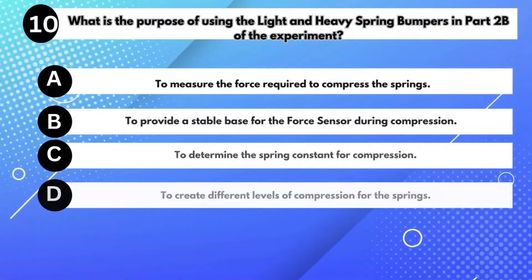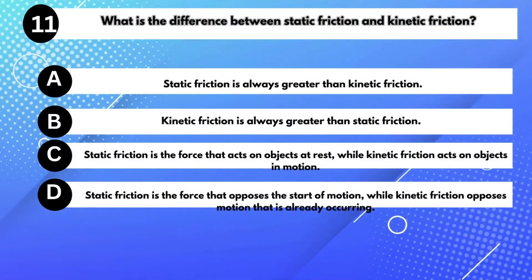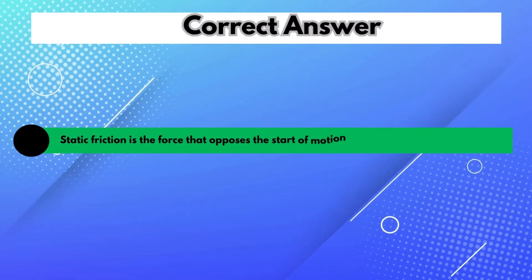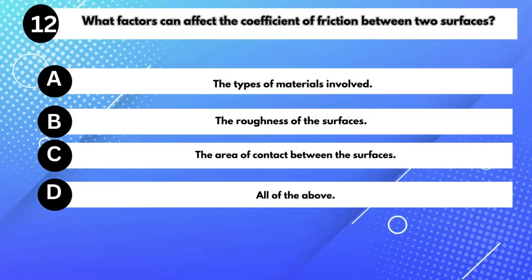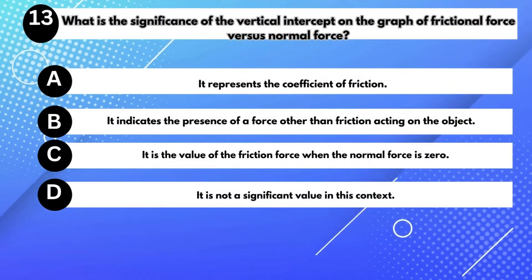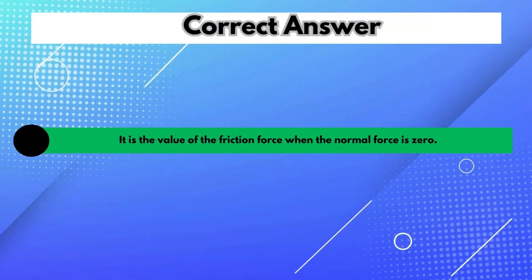What is the purpose of using the light and heavy spring bumpers in part 2B? Answer D: To create different levels of compression for the springs. What is the difference between static friction and kinetic friction? Answer D: Static friction is the force that opposes the start of motion, while kinetic friction opposes motion that is already occurring. What factors can affect the coefficient of friction between two surfaces? Answer: All of the above. What is the significance of the vertical intercept on the graph of frictional force versus normal force? Answer C: It is the value of the friction force when the normal force is zero.